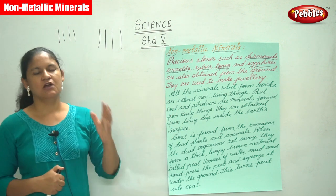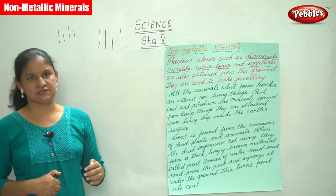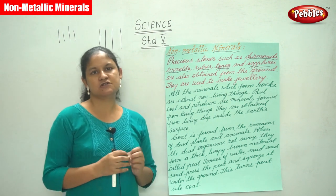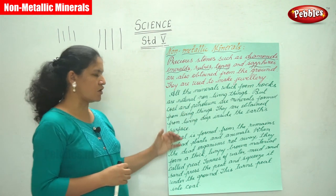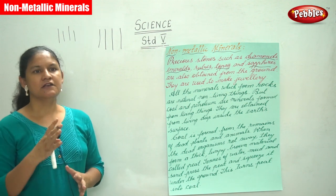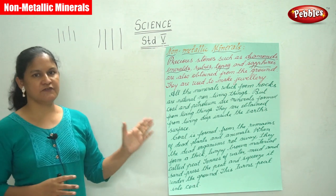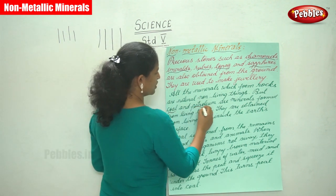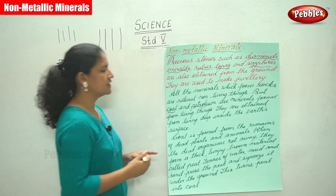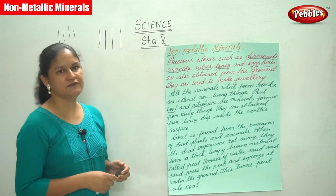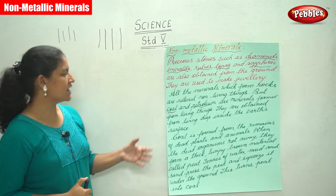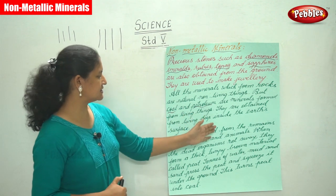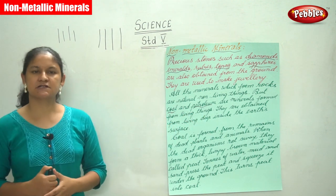All the minerals which form rocks are natural non-living things. These minerals are cemented together to form rocks. However, coal and petroleum are minerals formed from living things — they are obtained from deep inside the earth's surface.